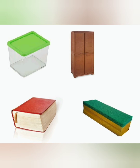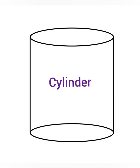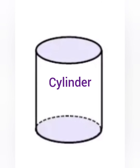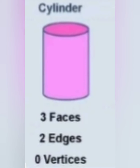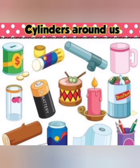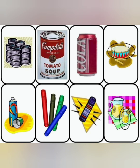Now coming to cylinder. A cylinder has two flat faces, which are at the top and the bottom, and one curved face, that is the middle part of the cylinder. It has two edges, where the curved face and flat face meet. And there are no corners for a cylinder.